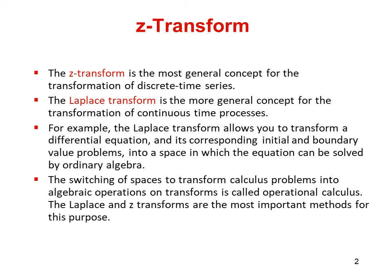In the study of discrete time signals and systems, we have thus far considered the time domain and frequency domain. The Z domain gives us the third representation. All three domains are related to each other. A special feature of the Z-transform is that for signals and systems of interest to us, all of the analysis will be in terms of ratio of polynomials. Working with these polynomials is relatively straightforward.